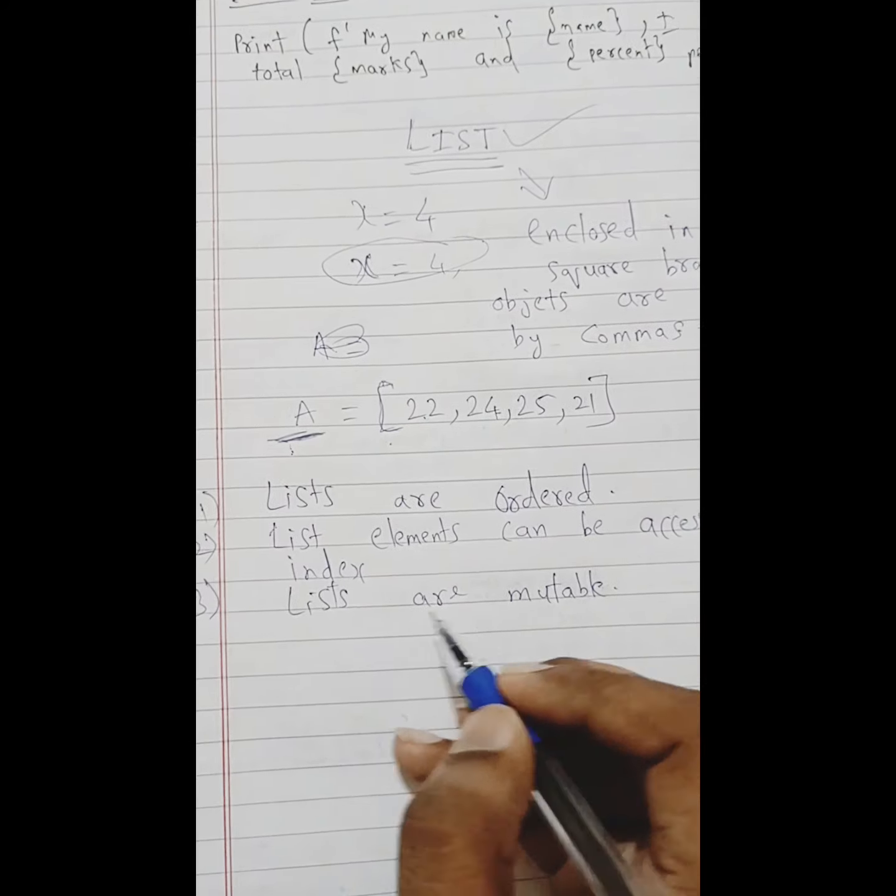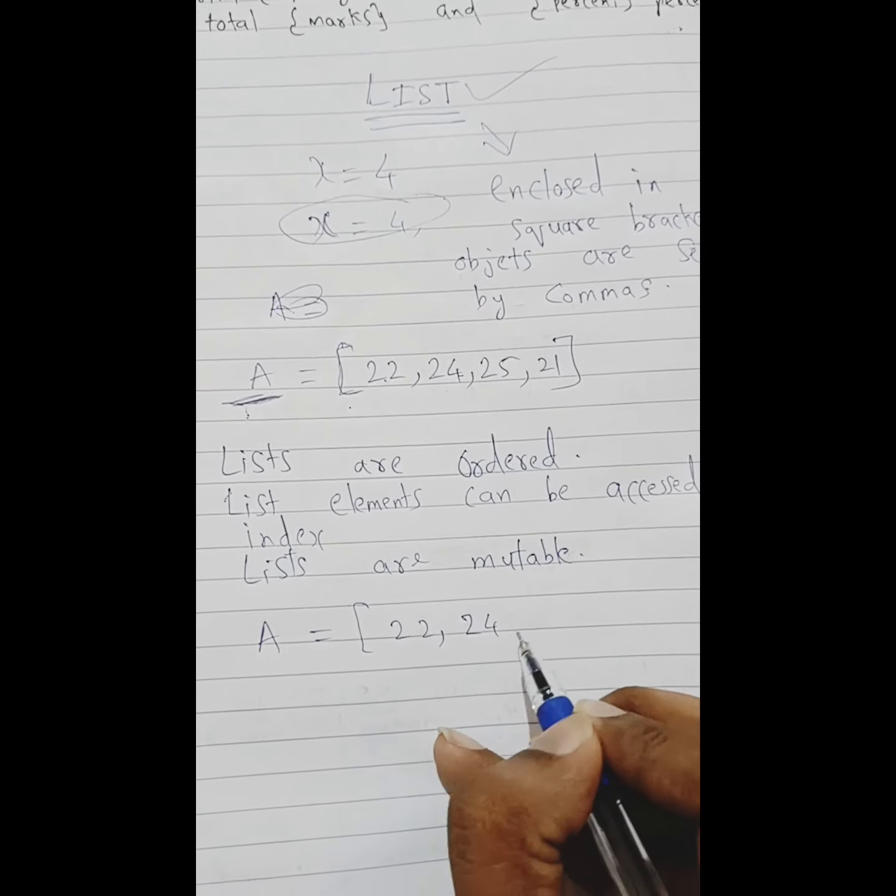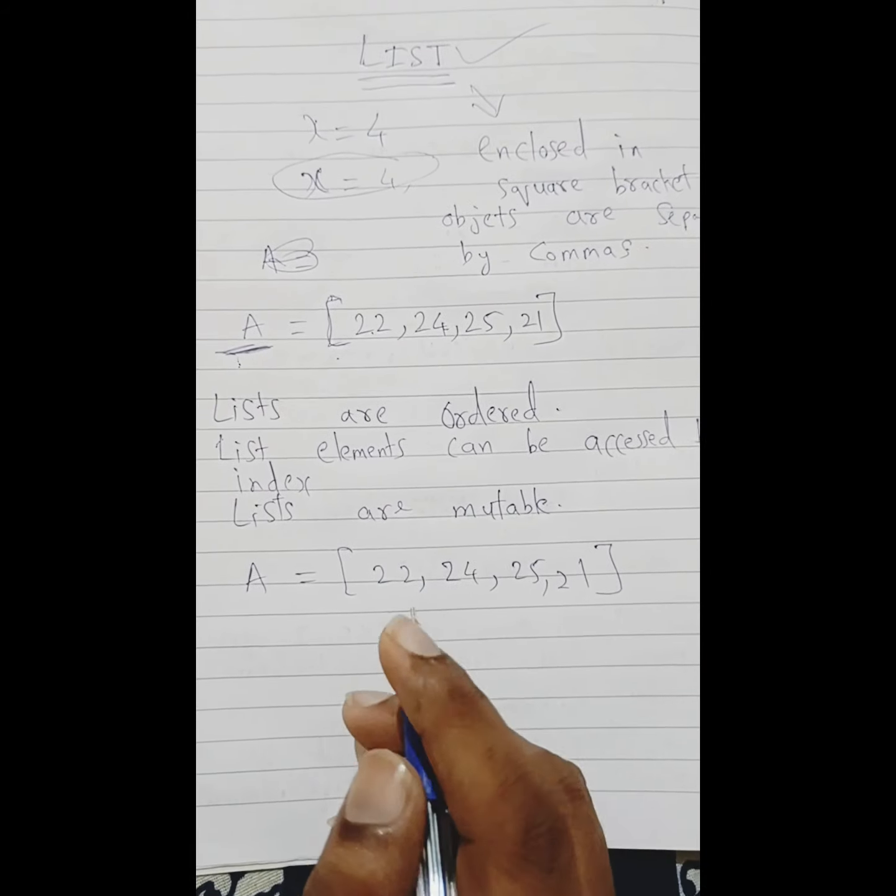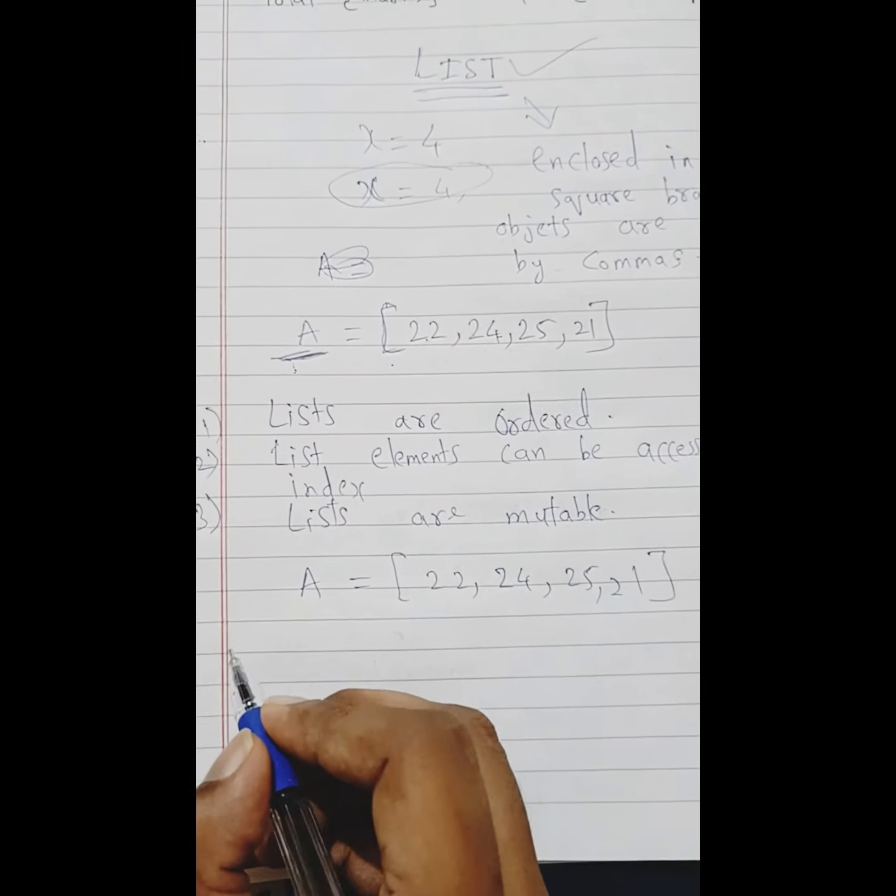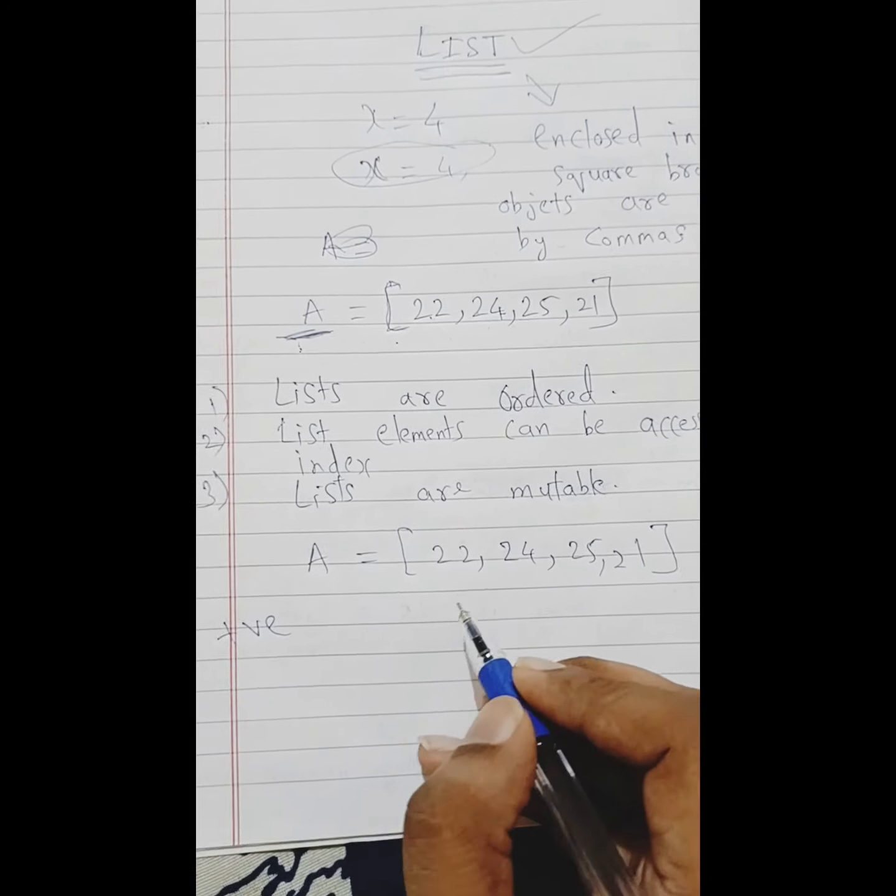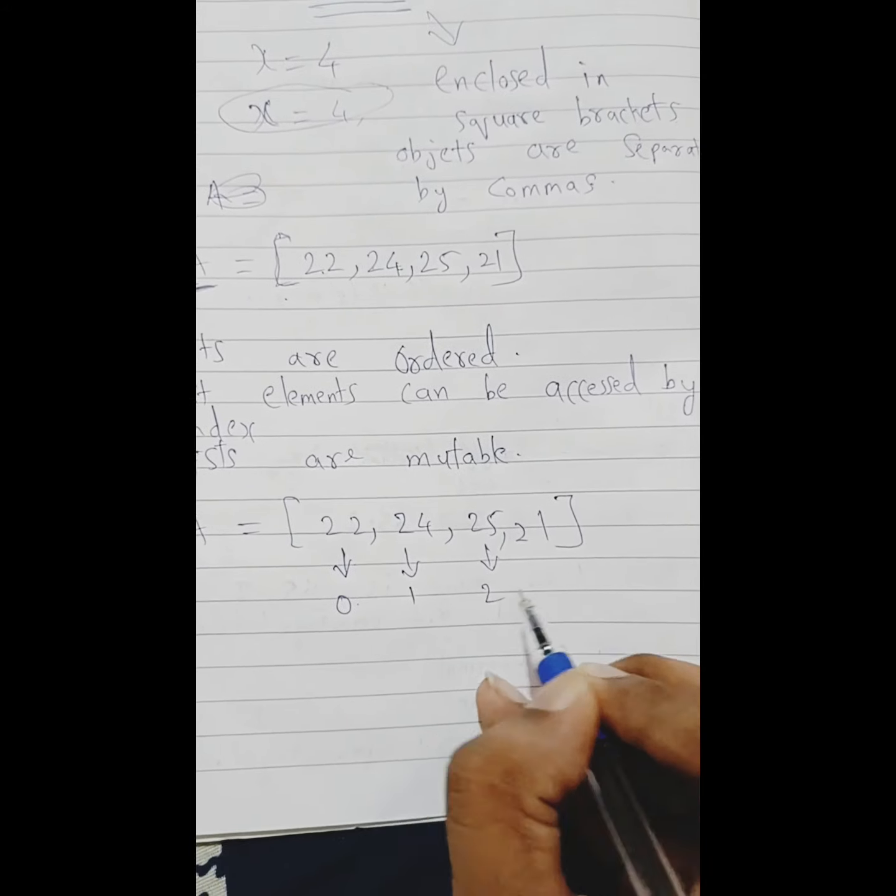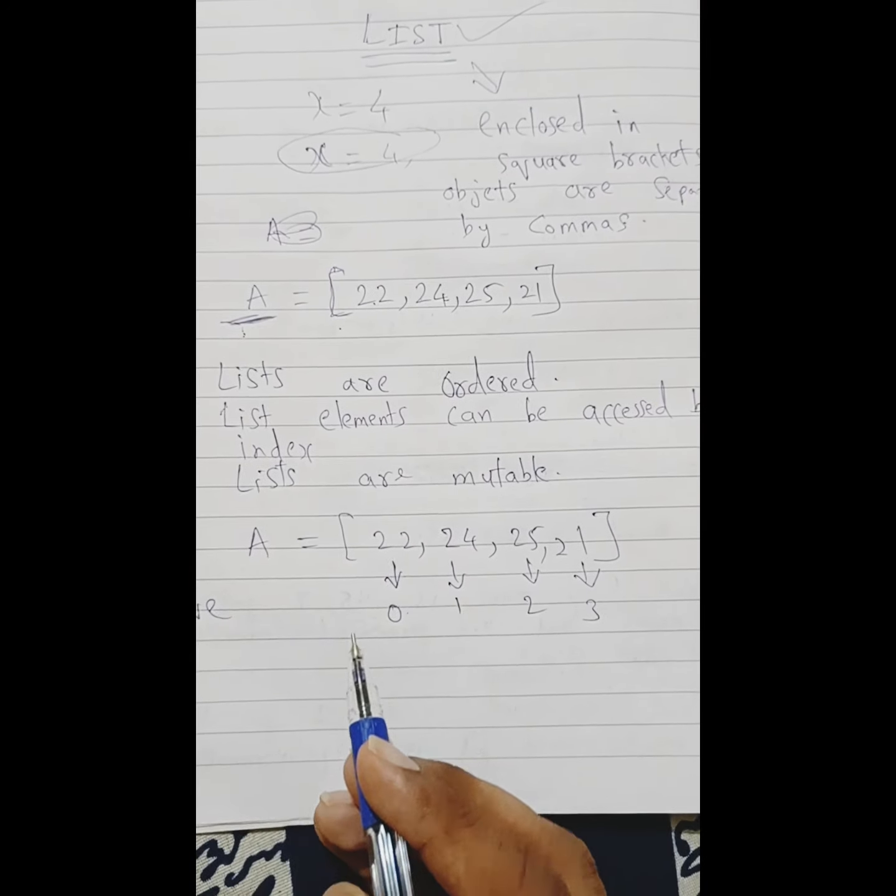Let's get to indexing. Indexing has positive and negative. Positive indexing starts from zero. First element is considered as zero, then one, two, three. This is the indexing for positive.